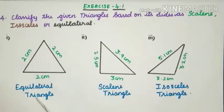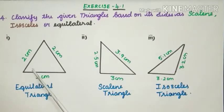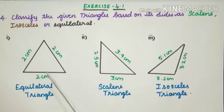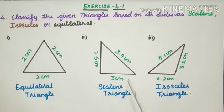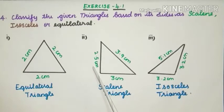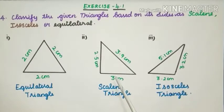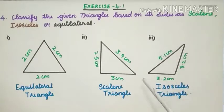Summary: the first triangle has all equal sides — 2 cm, 2 cm and 2 cm — so it is an Equilateral triangle. The second triangle has all sides different in length: 3.9 cm, 3 cm and 2.5 cm, so it is a Scalene triangle. In the third triangle, two sides are equal and one is different, so it is called an Isosceles triangle.